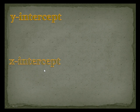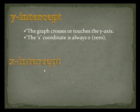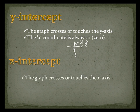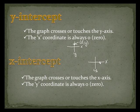Now let's talk about the y-intercept and the x-intercept as a review. The y-intercept is where the graph crosses or touches the y-axis, and the x-coordinate is always 0. At that point, x is always 0 and y is some number wherever it is on the axis. The x-intercept is where the graph crosses or touches the x-axis, and the y-coordinate is always 0 — x is some value and y is always 0 because it's nowhere on the y-axis.